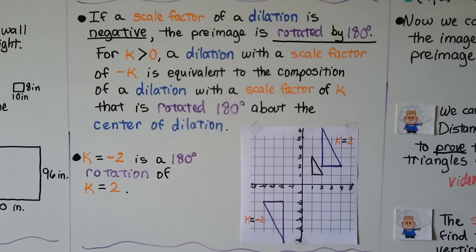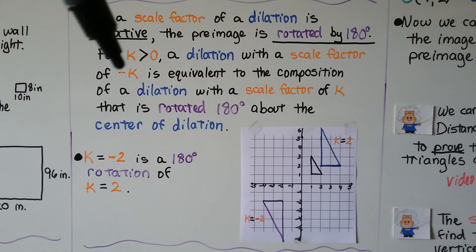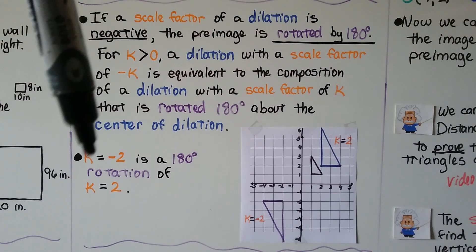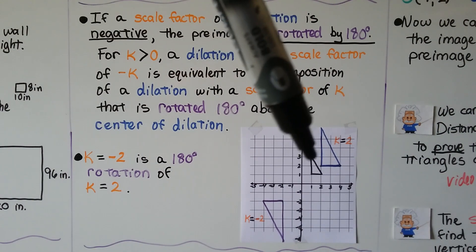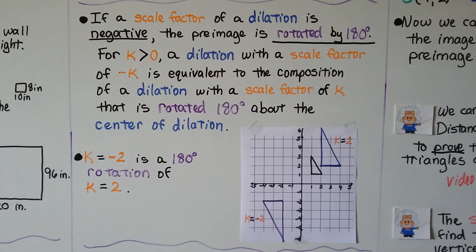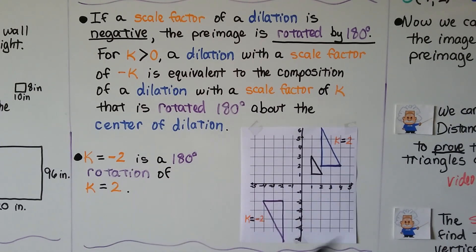If the scale factor of a dilation is negative, the pre-image is rotated by 180 degrees. For scale factor k greater than zero, a dilation with scale factor negative k is equivalent to the composition of a dilation with scale factor k rotated 180 degrees about the center of dilation. So if k is negative 2, it dilates to twice the size but then rotates 180 degrees — it gets bigger by the absolute value amount and then rotates.